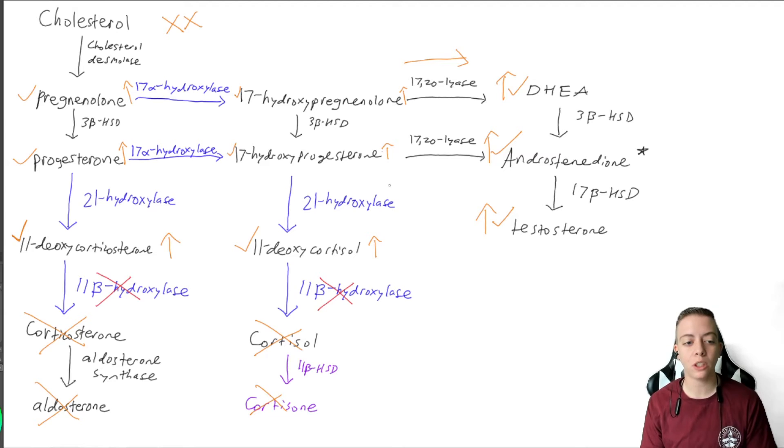And something important to note, looking at this pathway, we're going to have high androgens, but we're also going to have high 11-deoxycorticosterone. And this is really important right here.